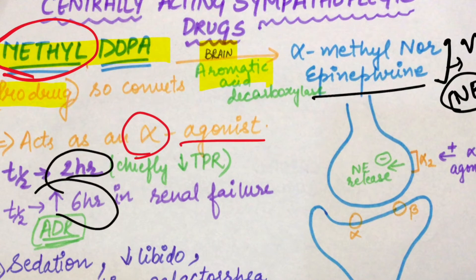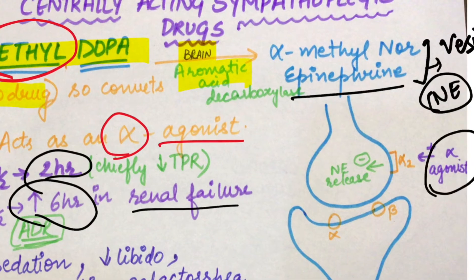The half-life of methyl dopa increases in renal failure because the kidney is responsible for its removal. This is why in renal failure, T½ is increased. As a result, total peripheral resistance decreases, which reduces blood pressure. The alpha methyl norepinephrine acts as an alpha-2 agonist — and the function of alpha-2 is normally to inhibit the release of norepinephrine.